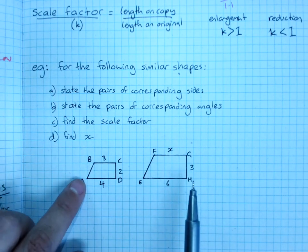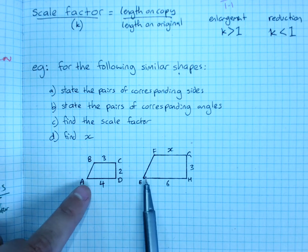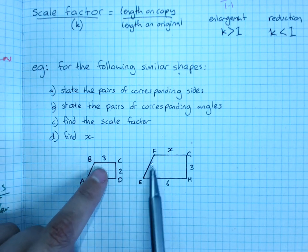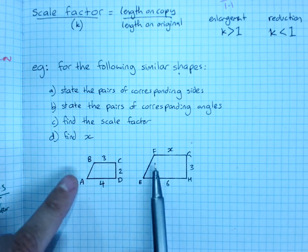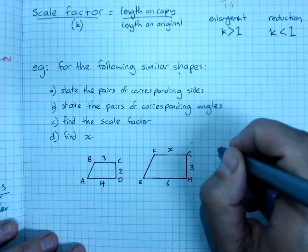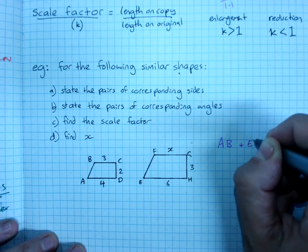State the pairs of corresponding sides. Well, AB corresponds with EF. They've got an obtuse angle and an acute angle and the others are all right angles, so it has to be this AB and EF.